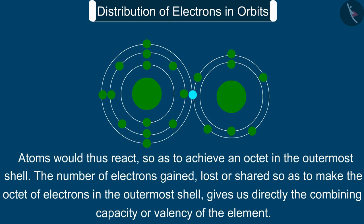The number of electrons gained, lost, or shared so as to make the octet of electrons in the outermost shell gives us the valency. The number of electrons is directly the combining capacity or valency of the element.